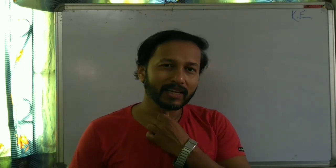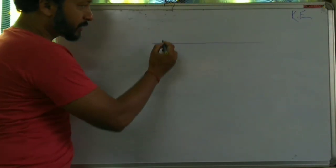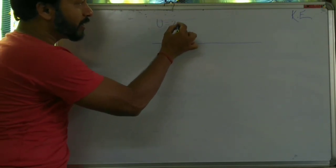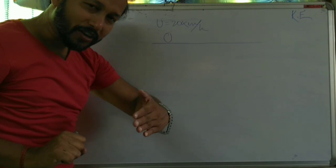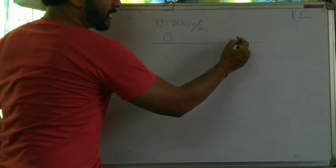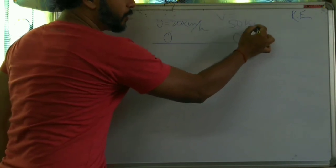Say you are driving a scooty, and the speed of the scooty is 20 km per hour. Now you are increasing the velocity of your scooty by acceleration. So let us consider your initial speed was 20 km per hour, and after giving the acceleration, the velocity increased to say 50 km per hour. So here is the scooty whose velocity is equal to 50 km per hour.